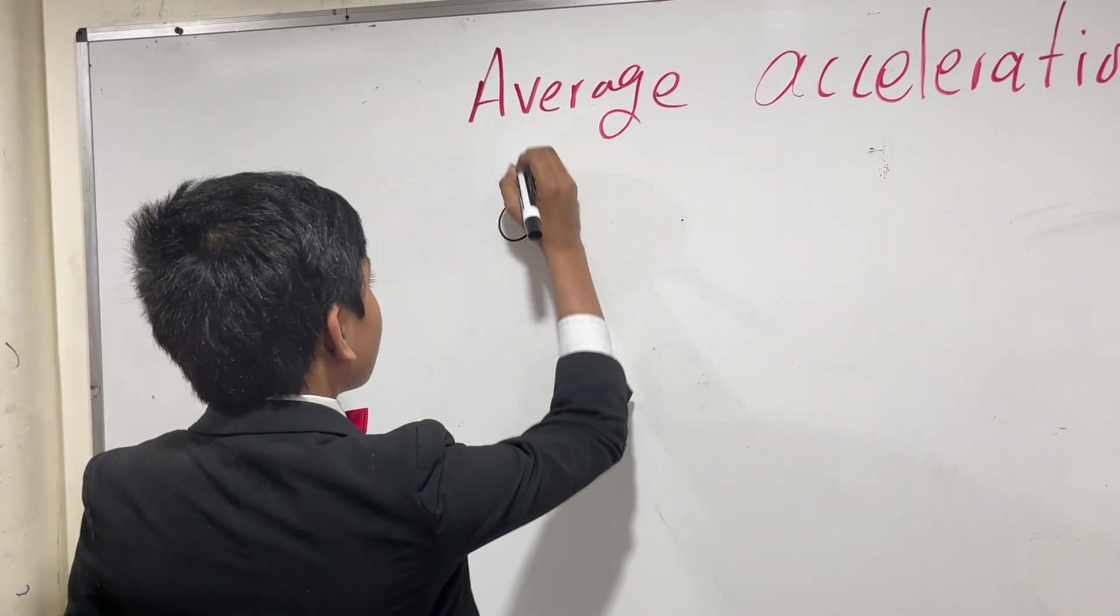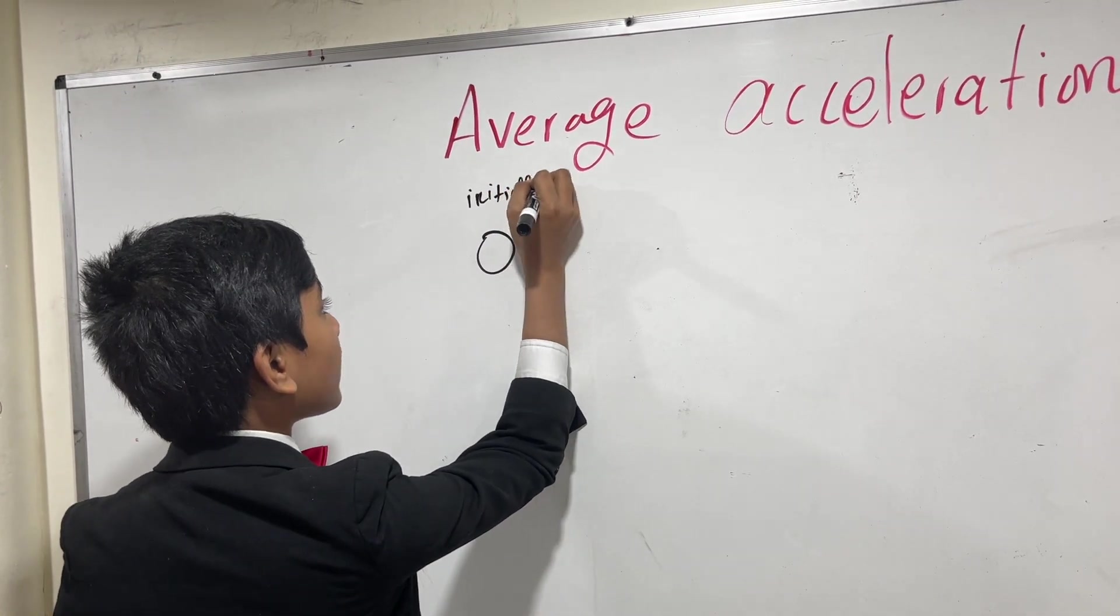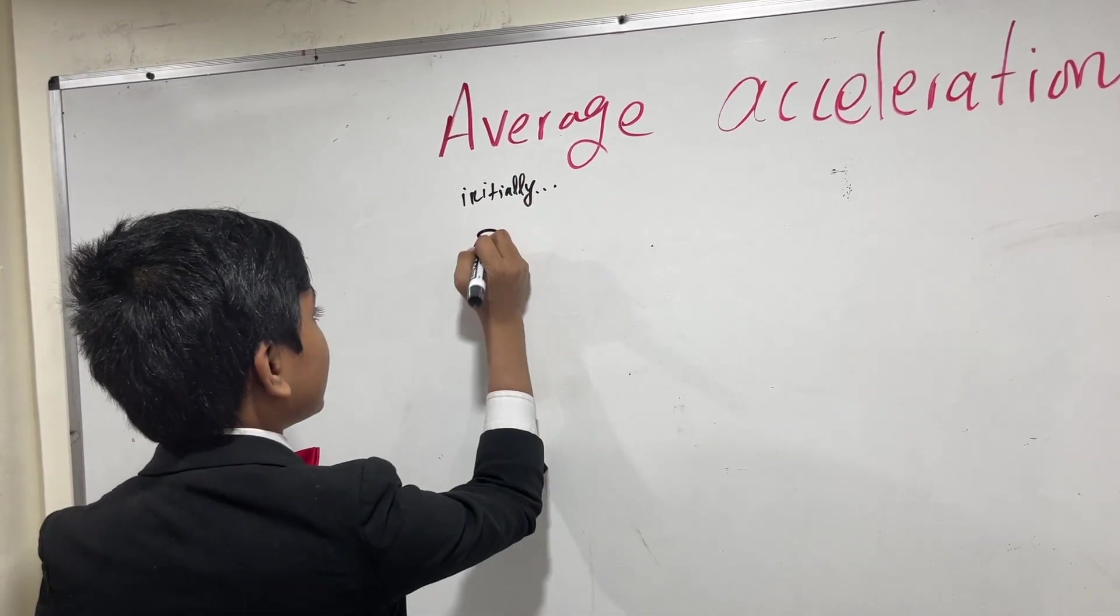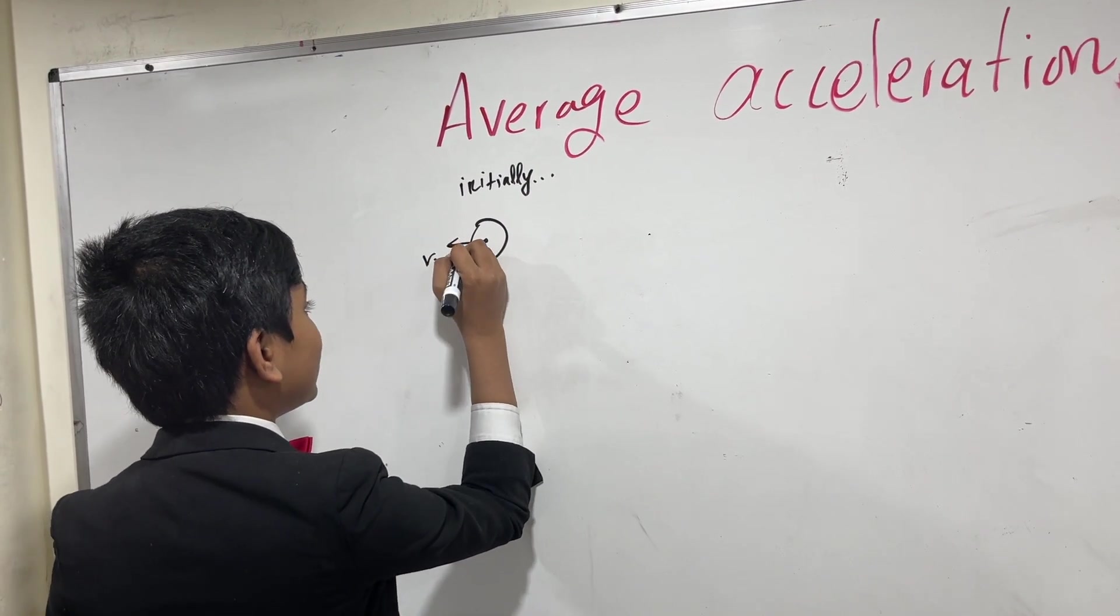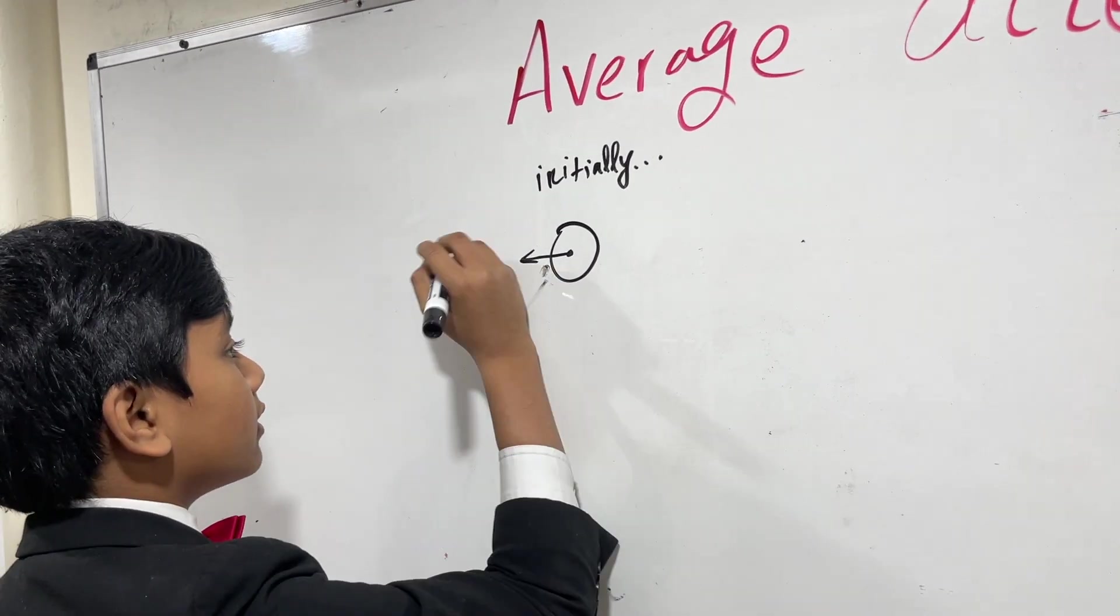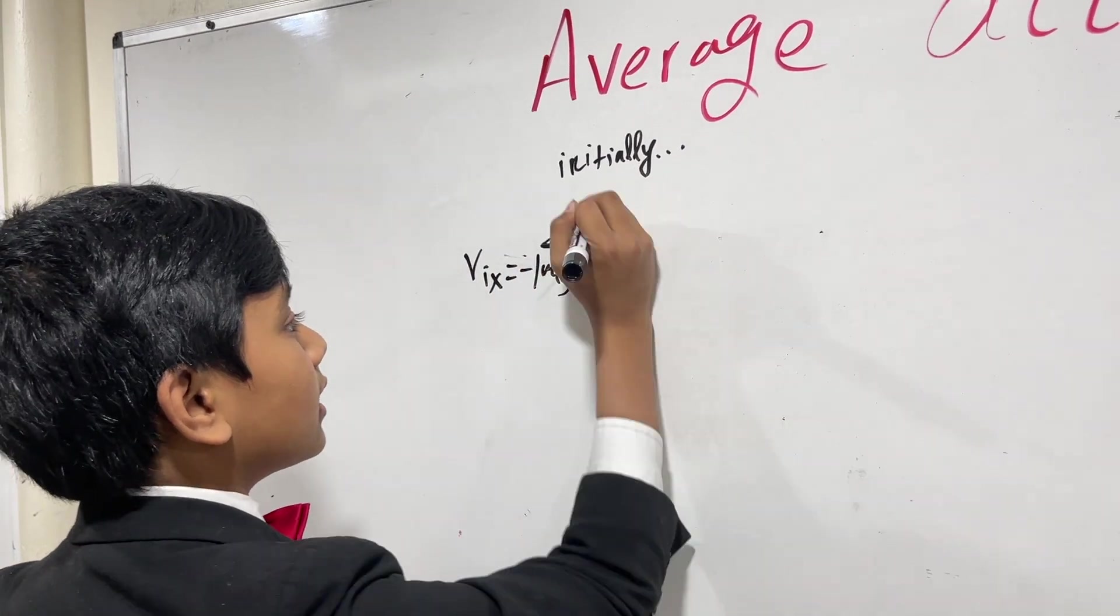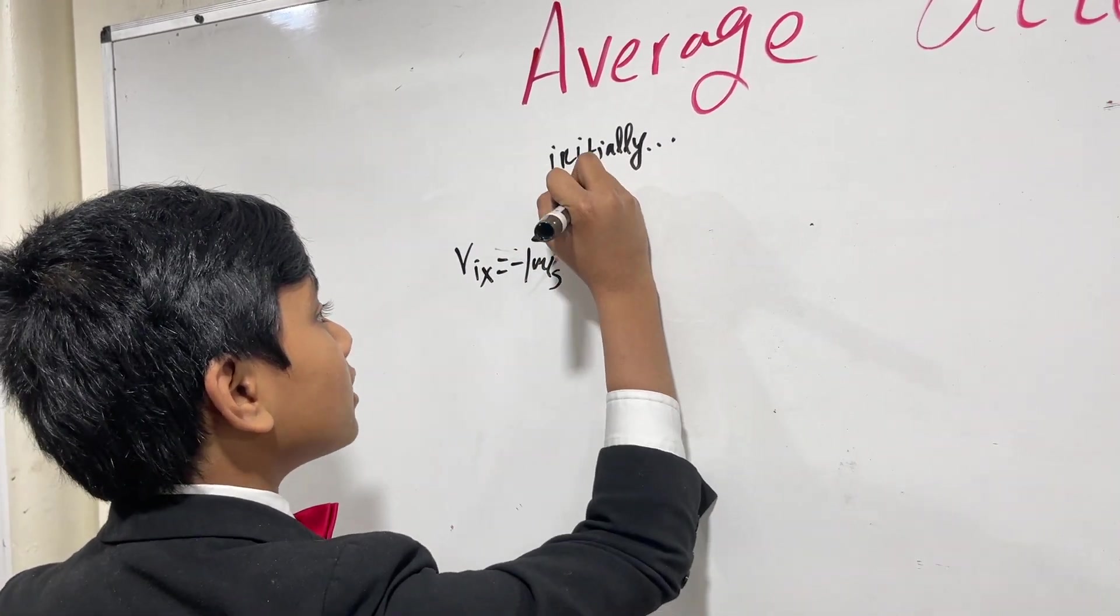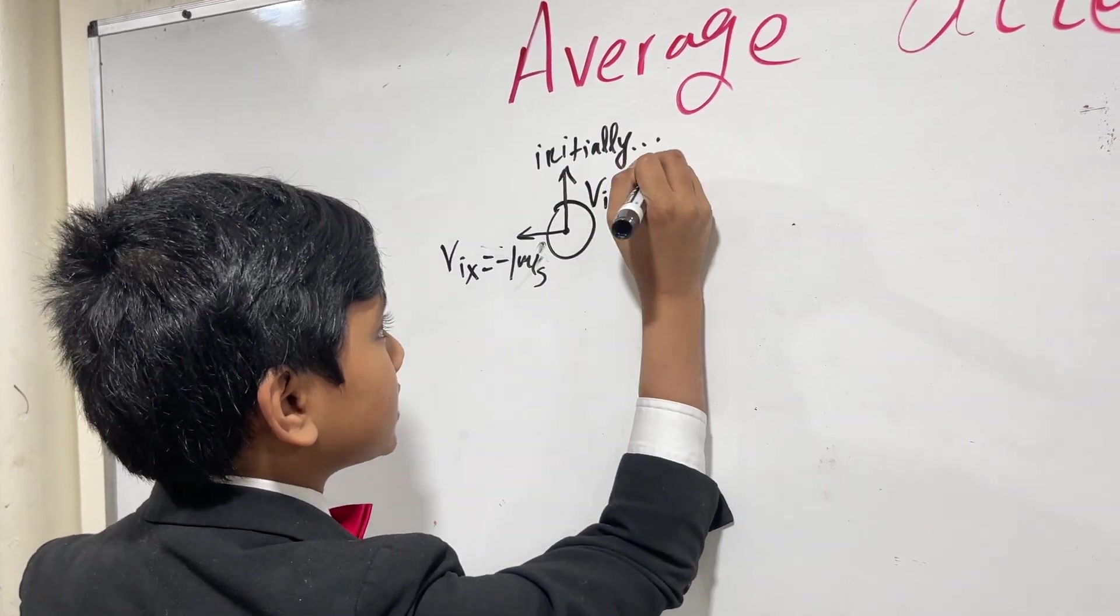So, initially, our ball has an x velocity of minus 1. Let's just write that a little bigger. Vix is equal to minus 1 meters per second. And Viy is 4 meters per second.